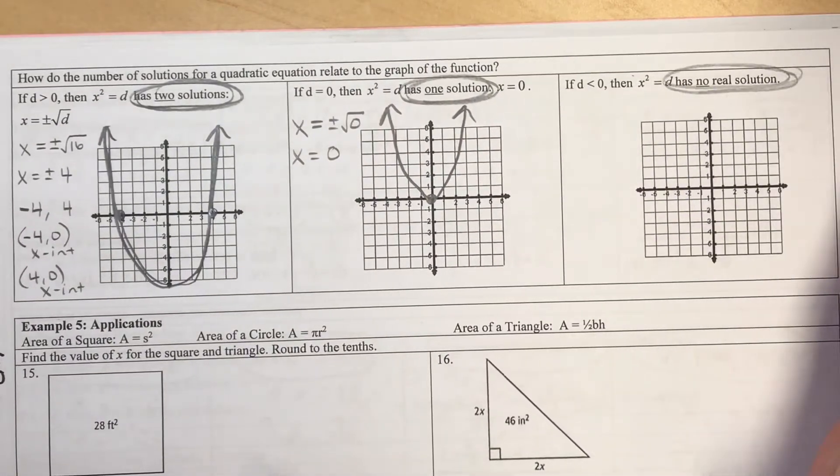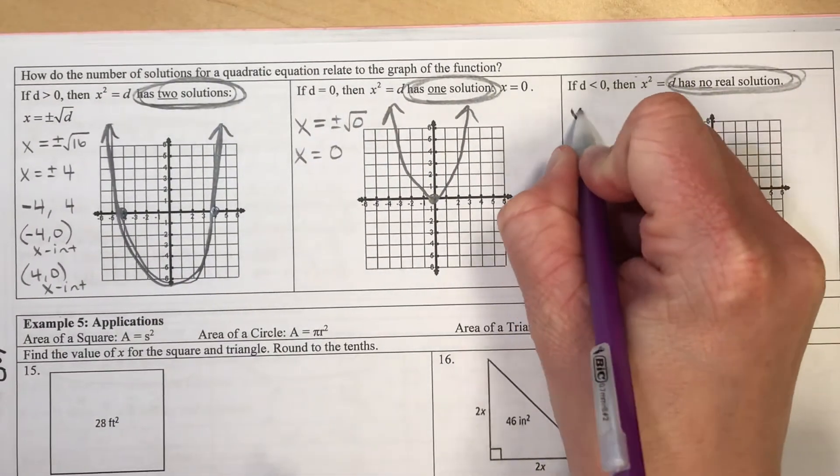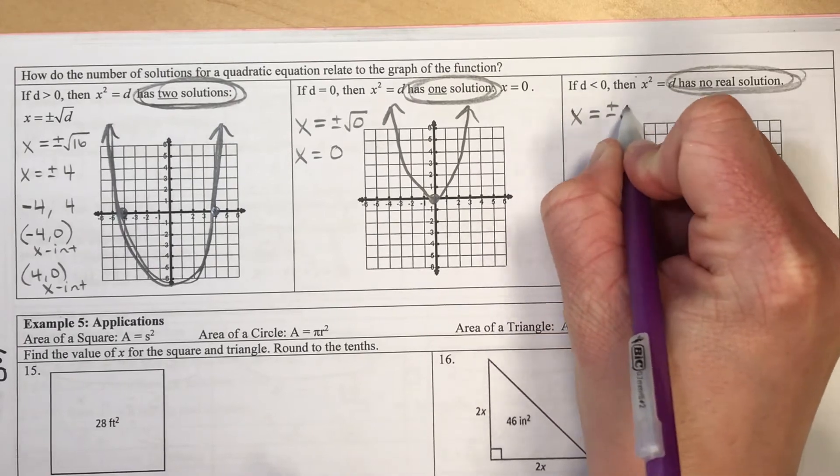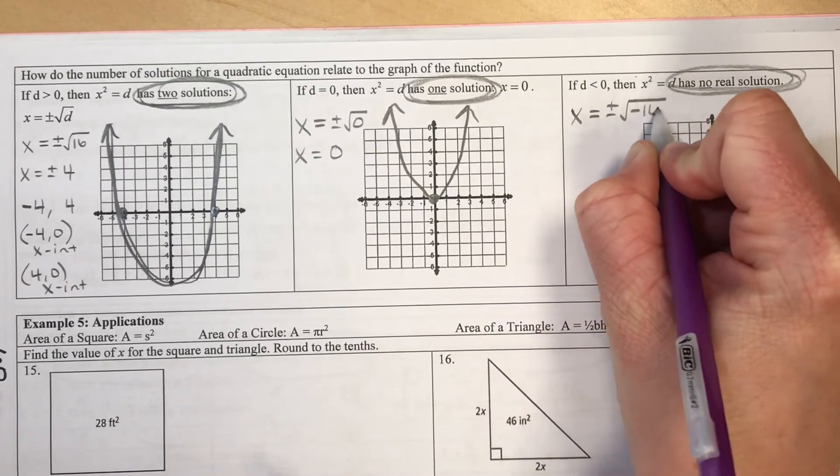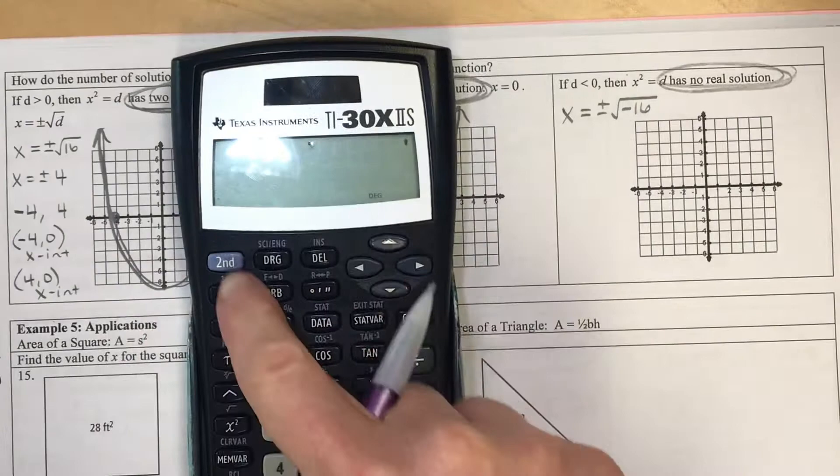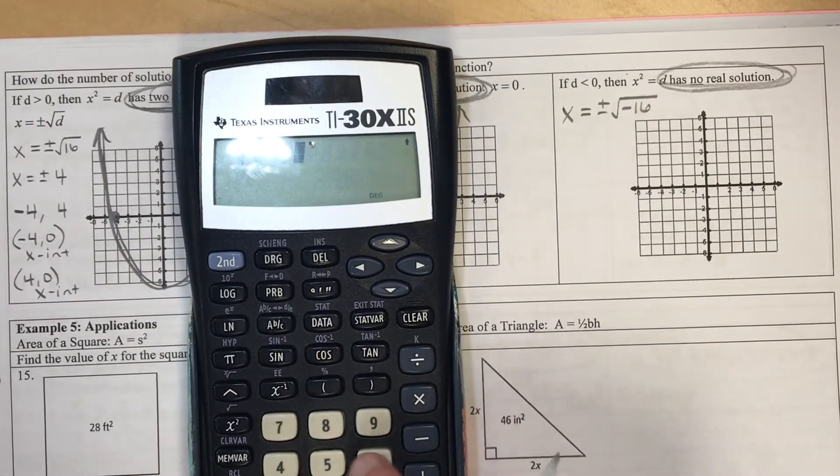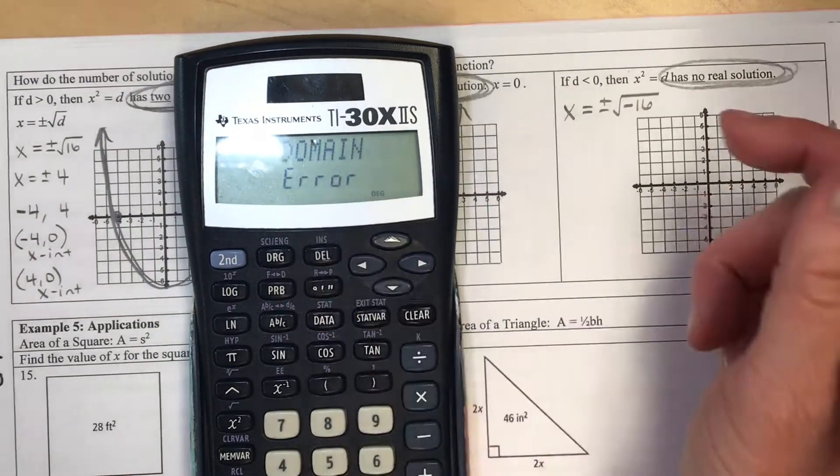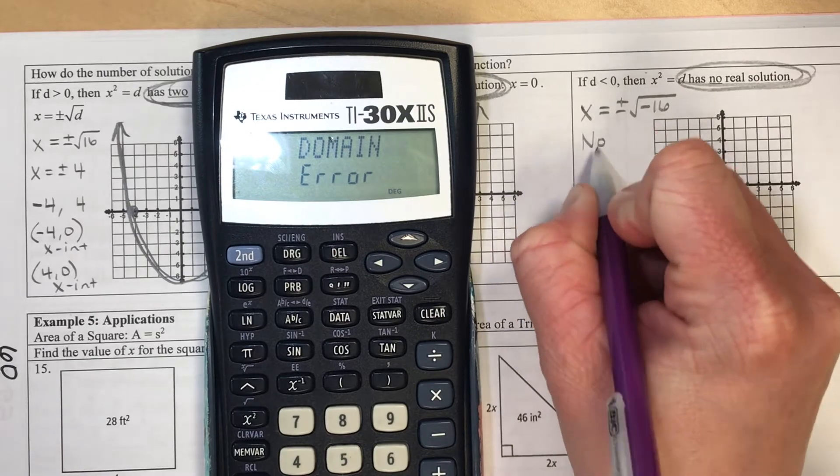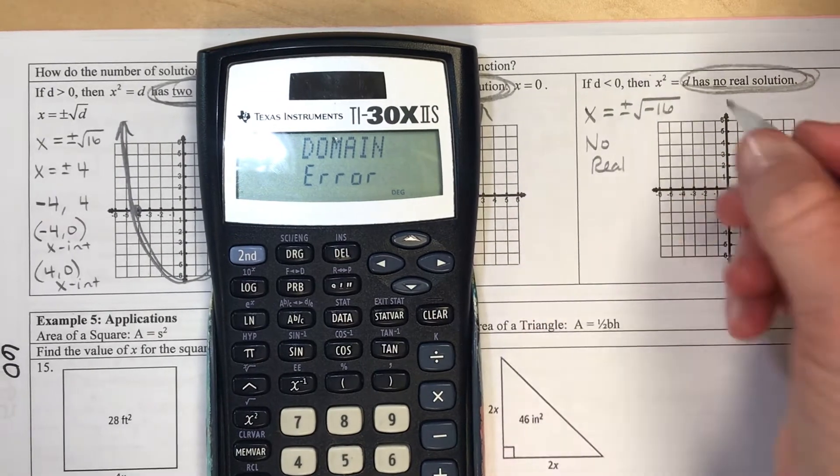Now no real solution would be when you're taking and solving for the square root of a negative number like negative 16. And notice when we try to solve that on your calculator it says error. And what that means is when we write no real solution according to the graph...